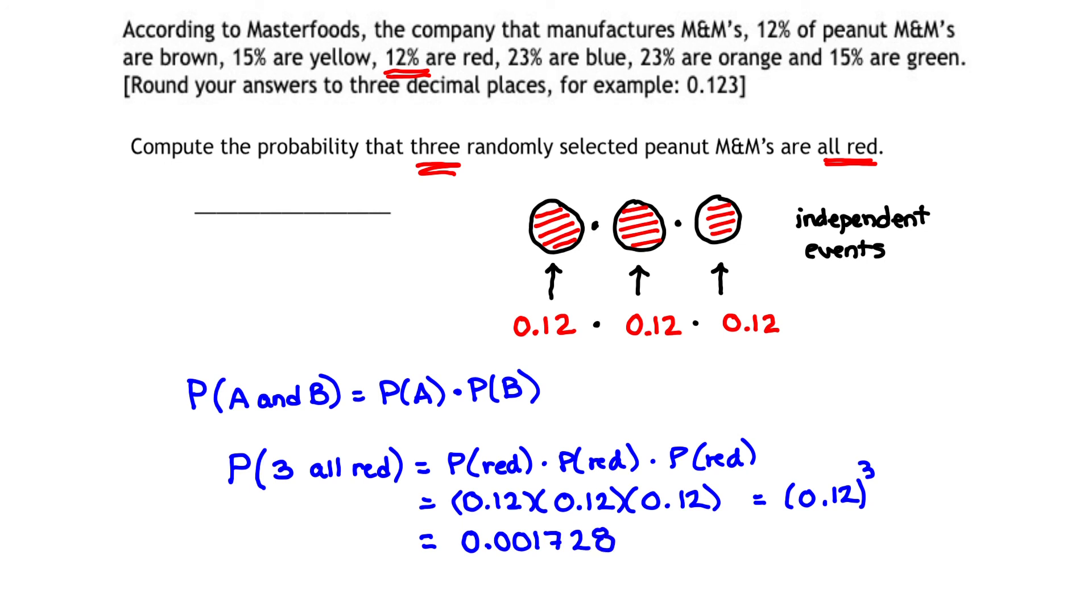That's the probability that three randomly selected peanut M&Ms will all be red.